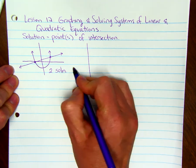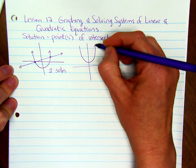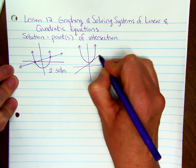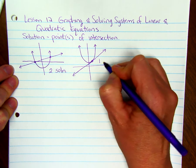If you have a parabola and a line that just touches the parabola at one point, then you're going to have one solution.